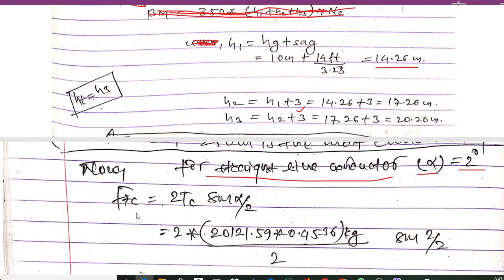The force due to turning of conductor is Ftc = 2 × Tc × sin(alpha / 2). Here Tc = UTS / safety factor. The UTS is 20121.59 pounds; multiplying by 0.4536 converts it to kg, then dividing by the assumed safety factor of 2 gives Tc. With alpha = 2 degrees, sin(1°) is applied. The result is Ftc = 159.29 kg.